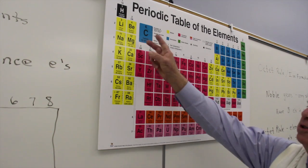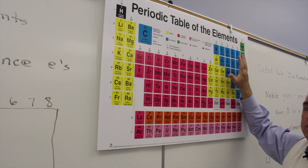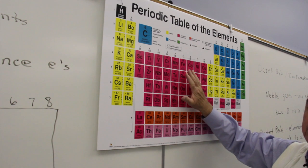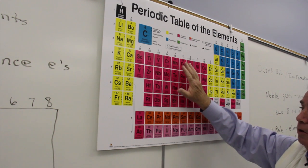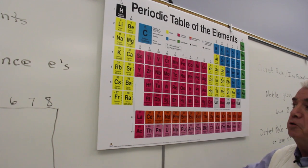Group A elements are found here on the left-hand side, the first two columns, and then these six columns to the right of the periodic table. We don't apply the concept of valence shell electrons to the center elements, the transition elements, or the inner transition elements.